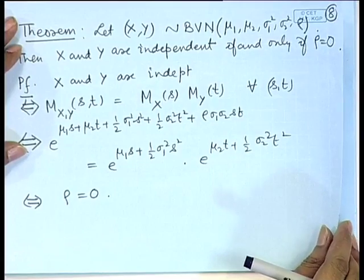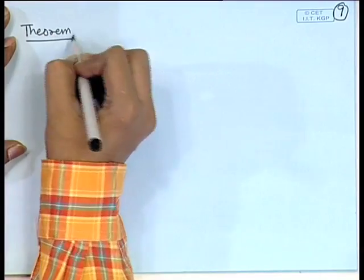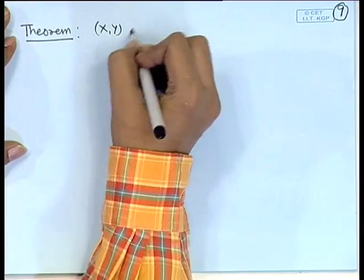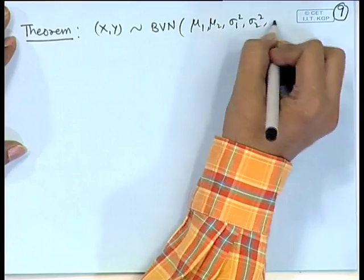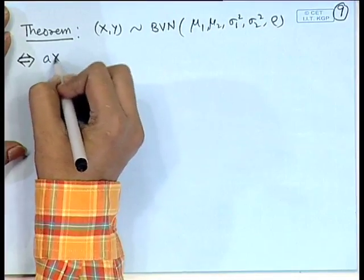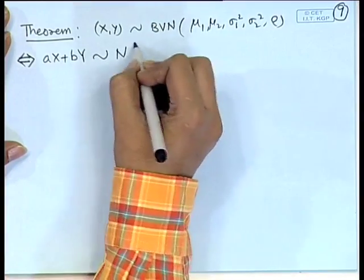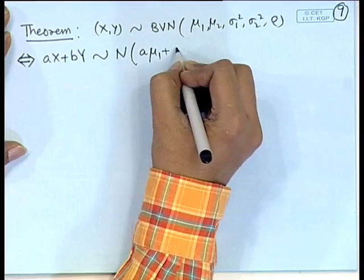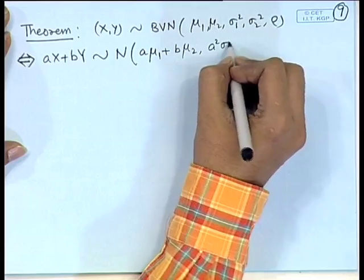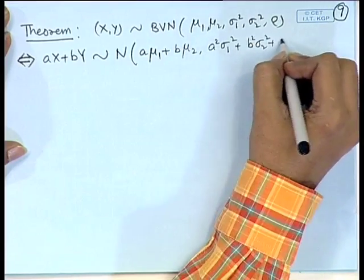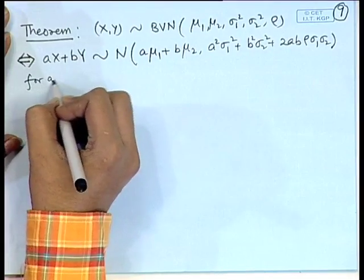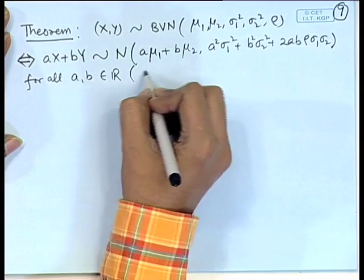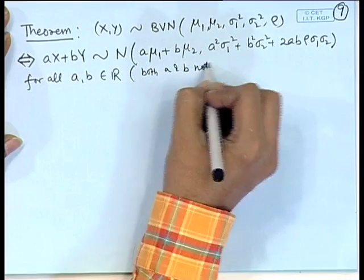We prove another property of the bivariate normal distribution using the moment generating function. X, Y follow a bivariate normal distribution with parameters mu_1, mu_2, sigma_1 squared, sigma_2 squared, rho if and only if AX + BY follows a univariate normal distribution with mean A mu_1 + B mu_2 and variance A squared sigma_1 squared + B squared sigma_2 squared + 2AB rho sigma_1 sigma_2, for all real A, B (not both simultaneously 0).